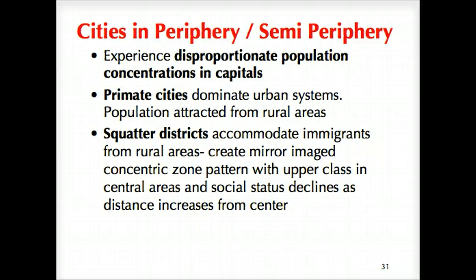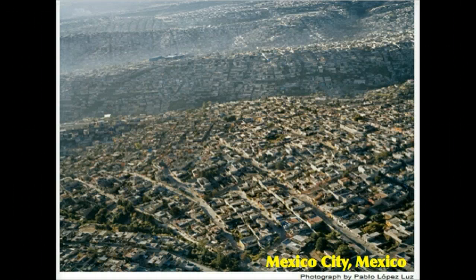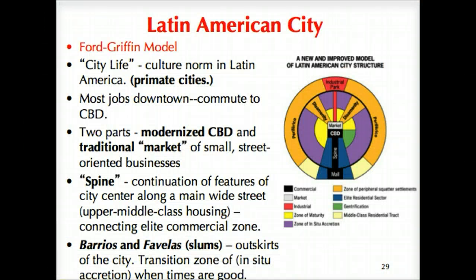Another key element is that most of these places tend to be primate cities, because the urban system is so desirable — or at least the potential for opportunity — that we see a disproportionate population drawn to these cities, establishing squatter districts. The further away you get from the CBD, the poorer the conditions tend to be, which is a very different picture compared to the concentric model in the United States. Hopefully this quick tutorial helps you better understand the Latin American city model.